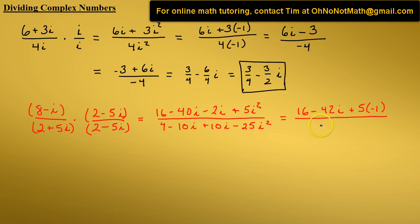Let's continue to simplify. We have 4. We have negative 10i plus 10i, those cancel. We have minus 25i squared, minus 25. For i squared, let's plug in the negative 1.